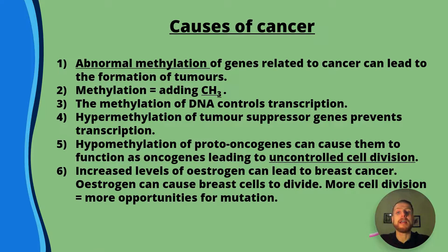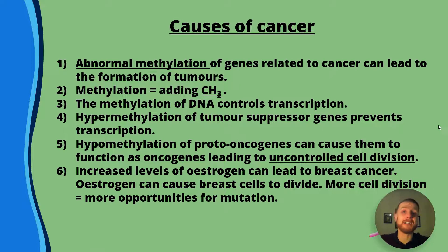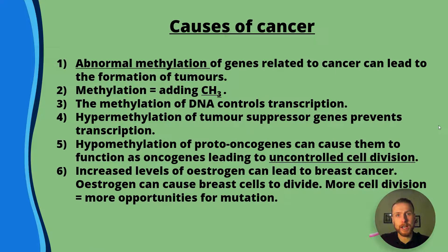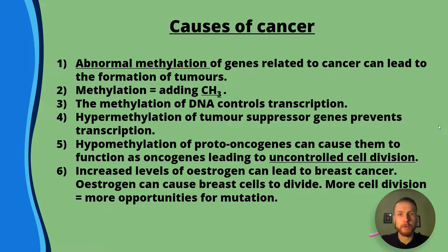Oncogenes are not good. Increased levels of oestrogen have been linked to breast cancer because oestrogen can cause breast cells to divide, and more cell division leads to more opportunities for mutation. Mutagenic agents such as UV radiation, X-rays, or ionizing radiation of any type can increase the frequency of mutations and therefore increase the likelihood of cancer. There are also other risk factors such as lifestyle — for example, the diet you eat, whether you smoke or drink — and also genetic factors that can play a role.